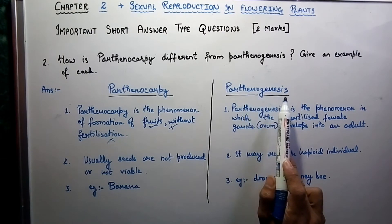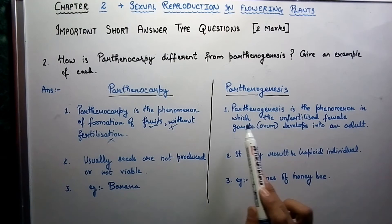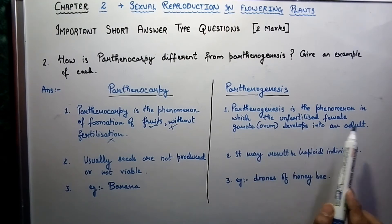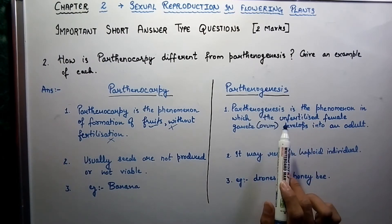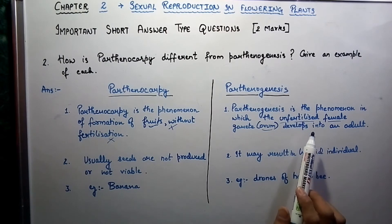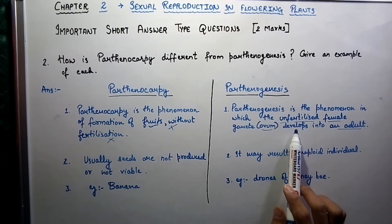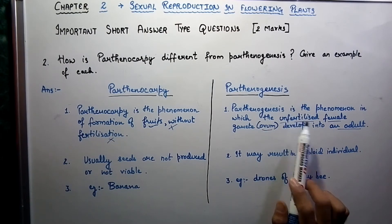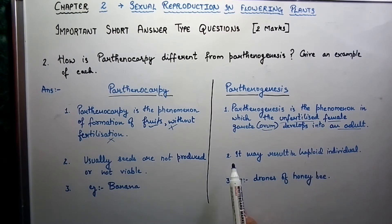Parthenogenesis is the phenomenon in which the unfertilized female gamete develops into an adult. The female ovum is not fertilized yet, and the adult develops without involving the process of fertilization. It may result in a haploid individual. The example is drones of honey bee.